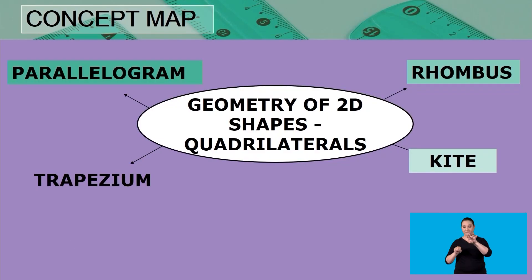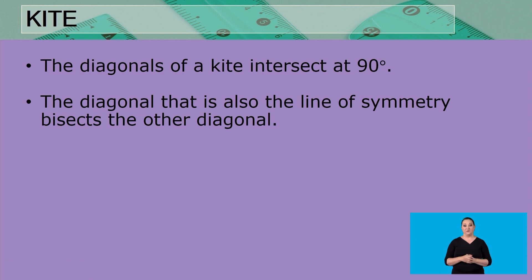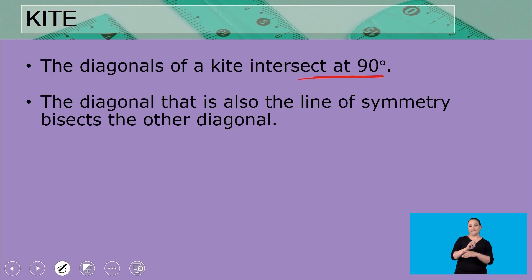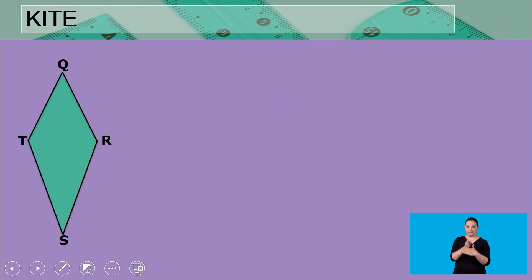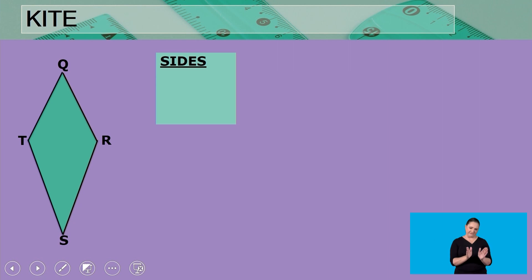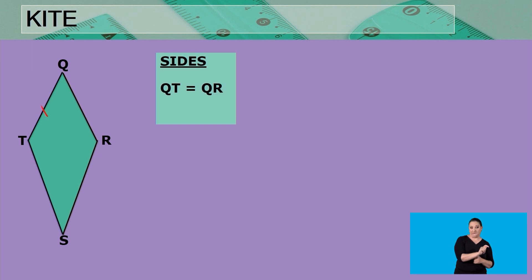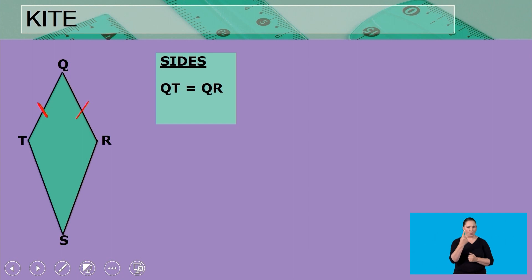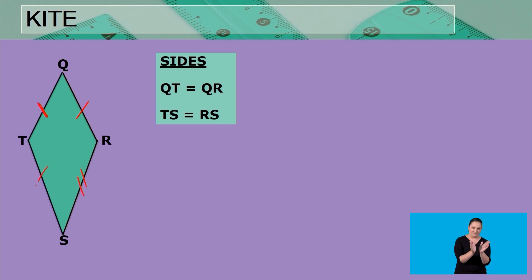Let's move on to the next concept on our concept map — the kite. The diagonals of a kite intersect at 90 degrees, meaning they are perpendicular. The diagonal that is also the line of symmetry bisects the other diagonal. We have kite QRST. The adjacent sides are equal — two pairs of adjacent sides: QT equals QR, and TS equals RS.